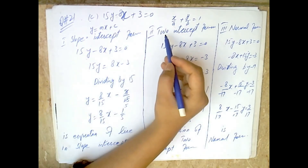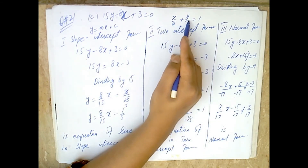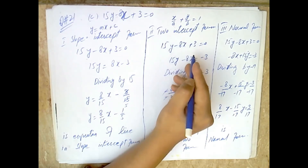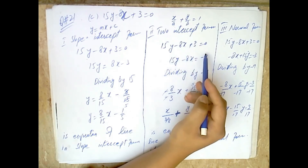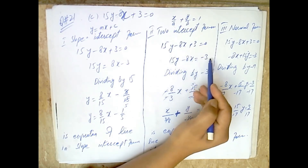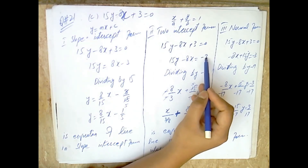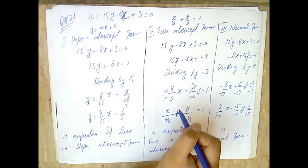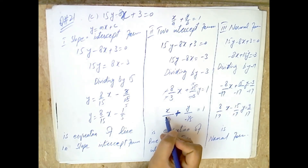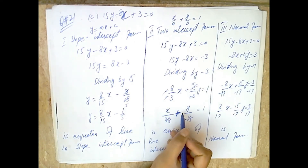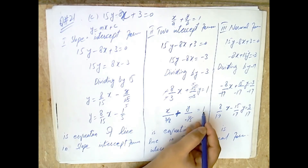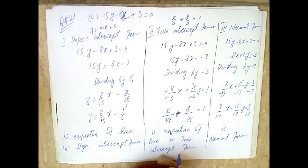Second, the two-intercept form x/a + y/b = 1. From 15y minus 8x + 3 = 0, we get minus 8x + 15y = minus 3. Dividing both sides by minus 3 gives: x/(3/8) minus y/(1/5) = 1, which can be written as x/(3/8) + y/(minus 1/5) = 1. This is the equation of the line in two-intercept form.